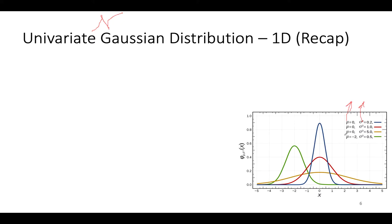The maximum point, or center point, is located at the mean. The variance hyperparameter tells us the spread: from the center point to one side is one sigma, and the other side is another sigma, so the overall distance represents two sigmas.